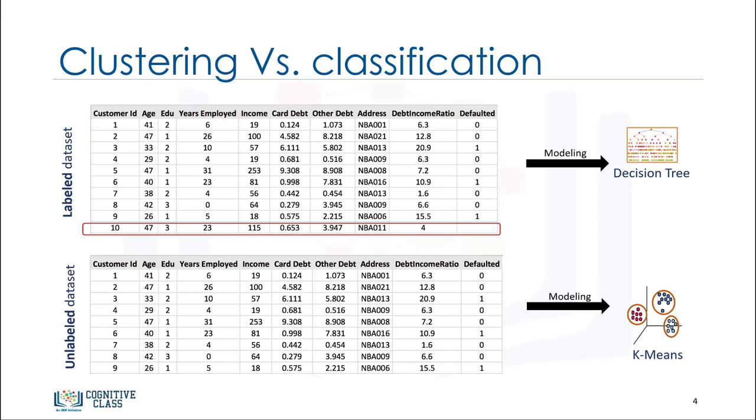For example, if an analyst wants to analyze customer data in order to know which customers might default on their payments, she uses a labeled dataset as training data and uses classification approaches such as a decision tree.